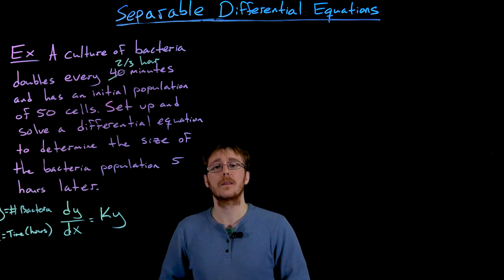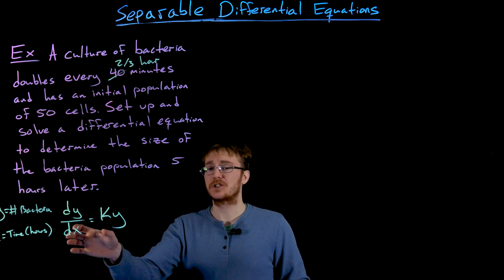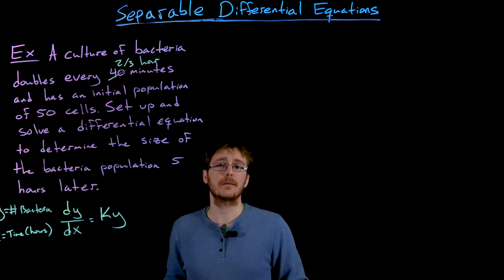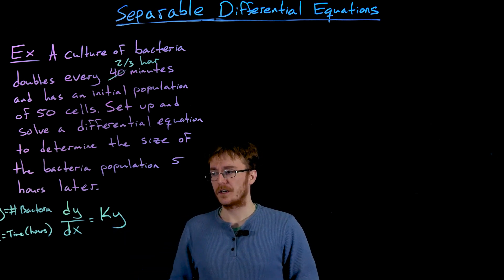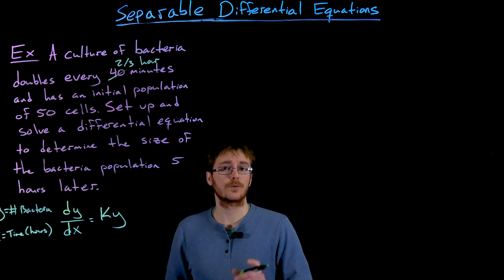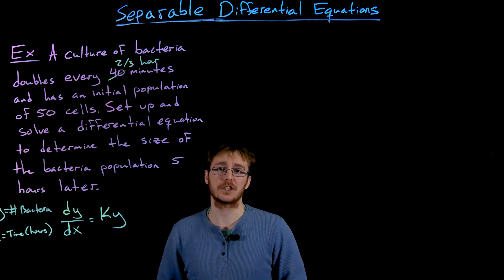we would know that at any moment in time, the rate of change would be two times the current size of the population. But we're not given enough information to figure out what k is right away, but we will be able to figure that out using our initial condition at some point.